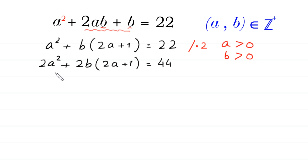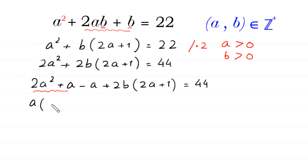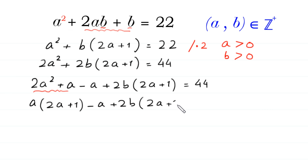Next, we add and subtract a on the left side of this equation: 2a squared plus a minus a, plus 2b times 2a plus 1 is equal to 44. This plus a minus a equals 0, so it does not change the whole expression. From the two terms 2a squared plus a, we can factor out a: a times 2a plus 1, minus a, plus 2b times 2a plus 1 is equal to 44.